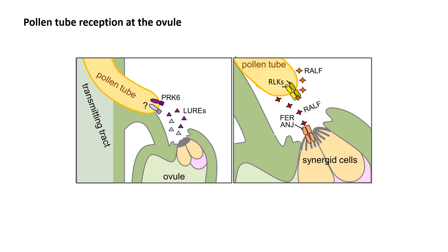The extracellular matrix of the transmitting tract supports pollen tube growth, which then emerges from the septum surface and enters the micropyle of an unfertilized ovule, guided by chemical signaling. The synergids within the embryo sac secrete small species-specific cysteine-rich polypeptides or CRPs, which are components of the innate immune system in plants. In Arabidopsis, these CRPs are called lure peptides. They are secreted through the filiform apparatus and are ligands of the pollen tube-expressed receptor-like kinase, the pollen-specific receptor-like kinase 6 or PRK6. This interaction orients the pollen tube tip to the micropyle through relocalization of the plasma membrane and interactions with intracellular signaling proteins.